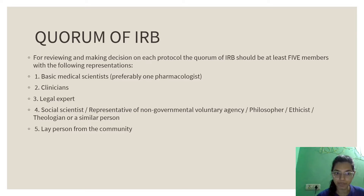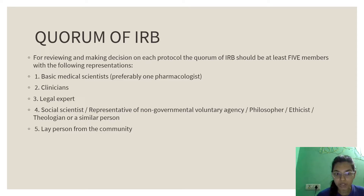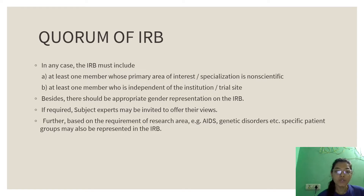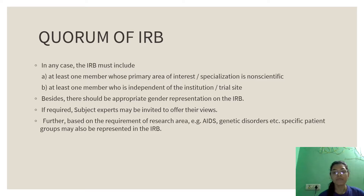Talking about the quorum of IRB: for reviewing and making decisions on each protocol, the quorum of IRB should have at least five members with the following representations — a basic medical scientist, preferably one pharmacologist; a clinician; a legal expert; a social scientist or representative of a non-governmental voluntary agency, or philosopher, ethicist, theologian, or similar person; and a layperson from the community. The quorum must include at least one member whose primary area of interest is non-scientific, and at least one member who is independent of the institution or trial site to maintain transparency of the clinical trial. There should also be appropriate gender representation on the IRB.